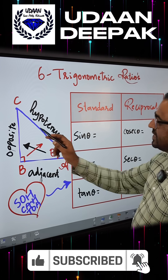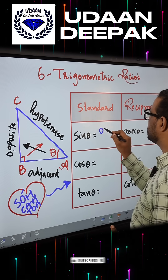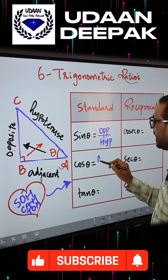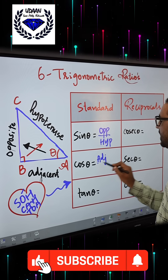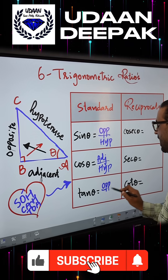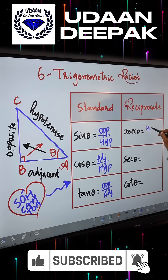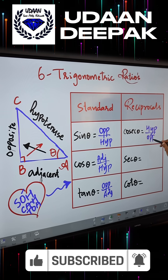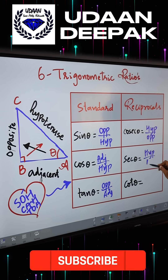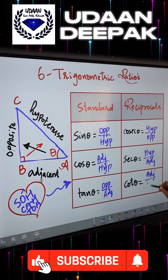So sine theta is opposite divided by hypotenuse. Similarly, cos theta is adjacent divided by hypotenuse. Tan theta is opposite divided by adjacent. Subsequently, the reciprocals are hypotenuse by opposite, hypotenuse by adjacent, and lastly adjacent divided by opposite.